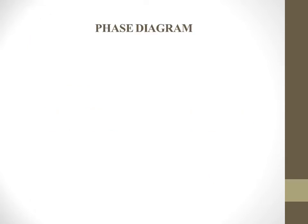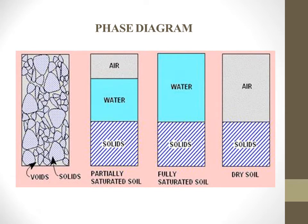Let's see what is the phase diagram. In the first figure, we consider a soil sample. The main items in soil are solids and voids. Soil solids are the solid particles. The voids can contain water and air. Water plus air is partially saturated soil; water alone is fully saturated soil.